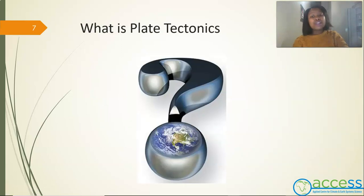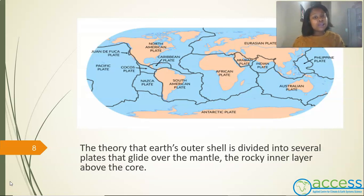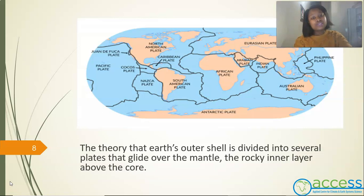Now that we know about our earth structure, let us find out what plate tectonics is. Plate tectonics is the theory that the earth's outer shell is divided into several plates that glide over the mantle. This tells us why the earth's geography has changed over time and continues to change, why mountain ranges are located where they are, why some regions are prone to earthquakes while others are not, and why some regions have deadly, mild or no volcanic eruptions at all.